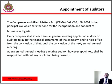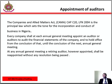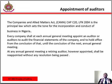The first auditors of a company may be appointed by the directors at any time before the company is entitled to commence business, and shall hold office until the conclusion of the next annual general meeting. The company may at a general meeting remove any such auditors and appoint in their place any other person who has been nominated by any member of the company, whose nomination notice has been given to members not less than 14 days before the date of the meeting. The directors may fill any casual vacancy in the office of the auditor, but while any such vacancy continues, the surviving or continuing auditors may act.